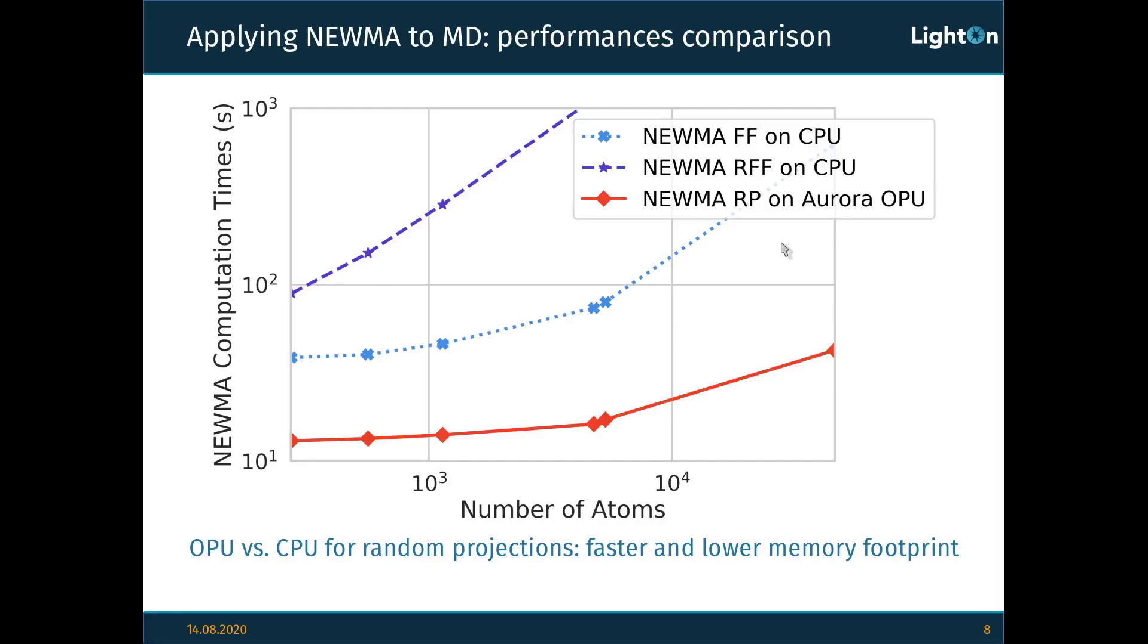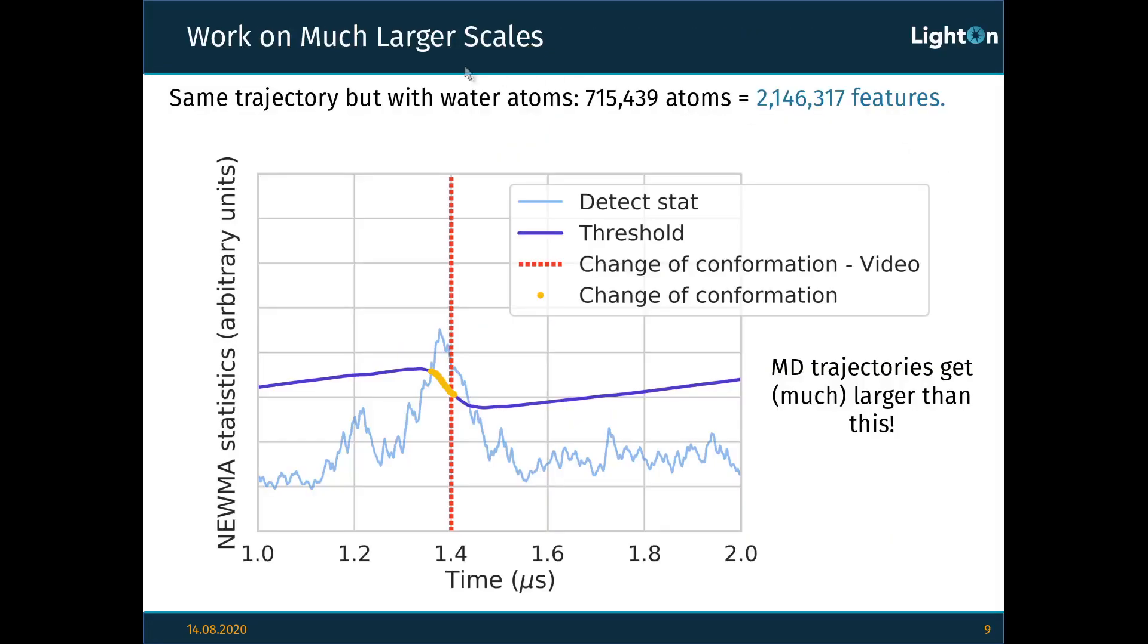Moreover, using the LightOn Aurora OPU to compute random projections also has a huge advantage, which is it has a much lower memory footprint. Indeed, when we use CPU-based algorithms, we need to somehow store the random matrix used to make random projections, and that costs a lot of memory. However, in the case of the LightOn Aurora OPU, it's literally the optics that does the random projection, and so there is no need of storing the matrix.